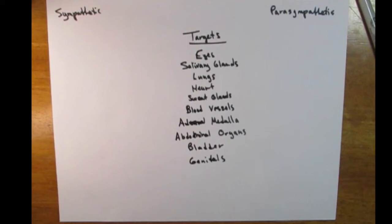Epinephrine, when secreted, has huge effects on your body. Adrenaline is known for things like speeding up your heart rate, increasing your blood pressure, and increasing your respiratory rate. So this right away should give you a clue of the power of the autonomic nervous system — the ability to secrete large quantities of adrenaline directly into your bloodstream. There's the secretion story.